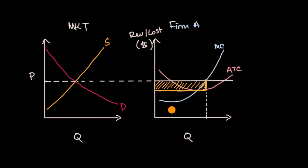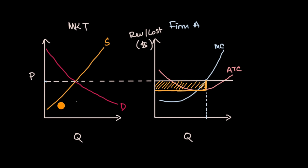That's in the short run, but now let's think about what will likely happen in the long run. If people see others making a positive economic profit — and remember, economic profit includes opportunity costs — many people will want to put their resources into this market to earn that positive economic profit as well. As more firms enter this market, that's going to shift the supply curve to the right.